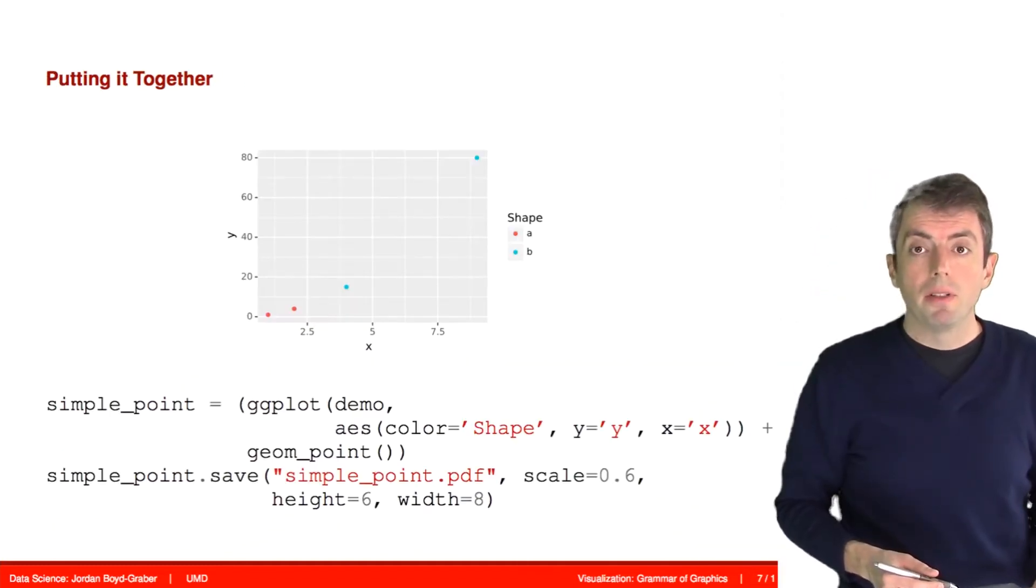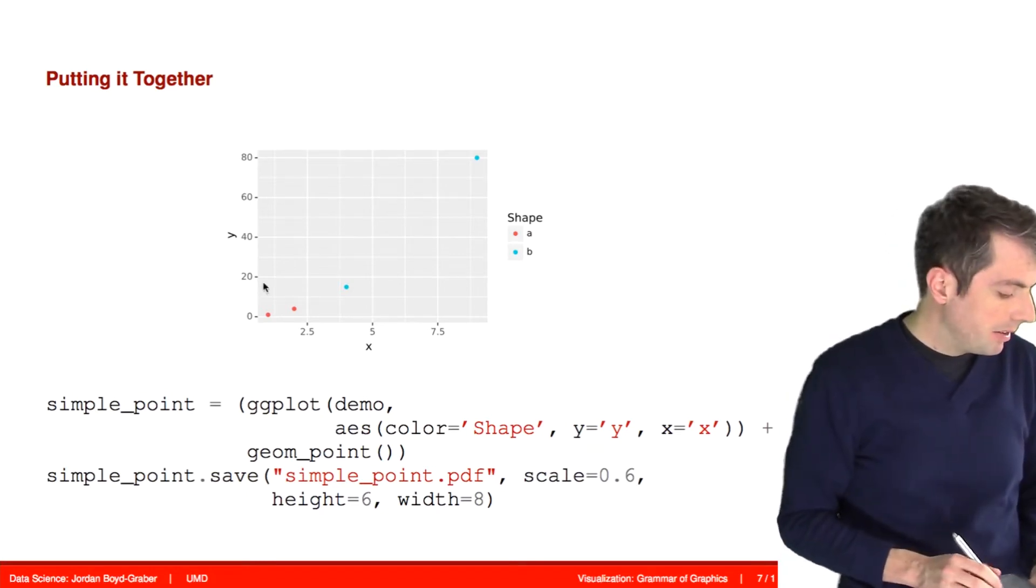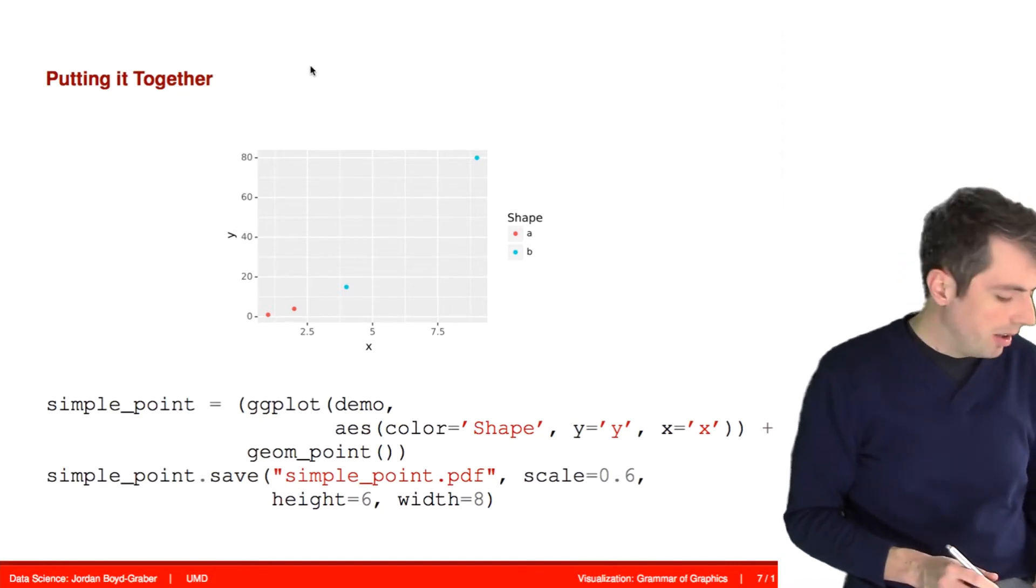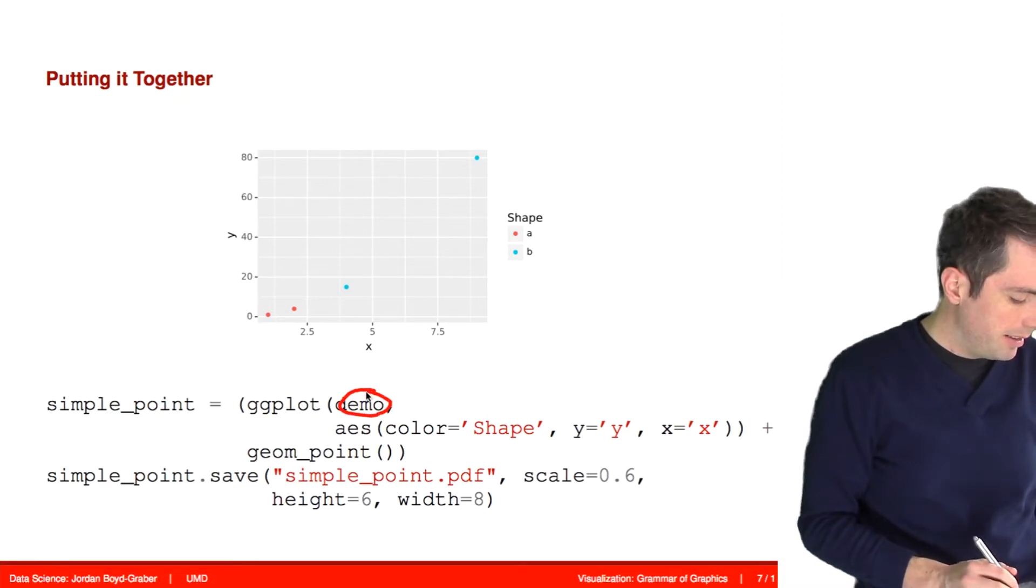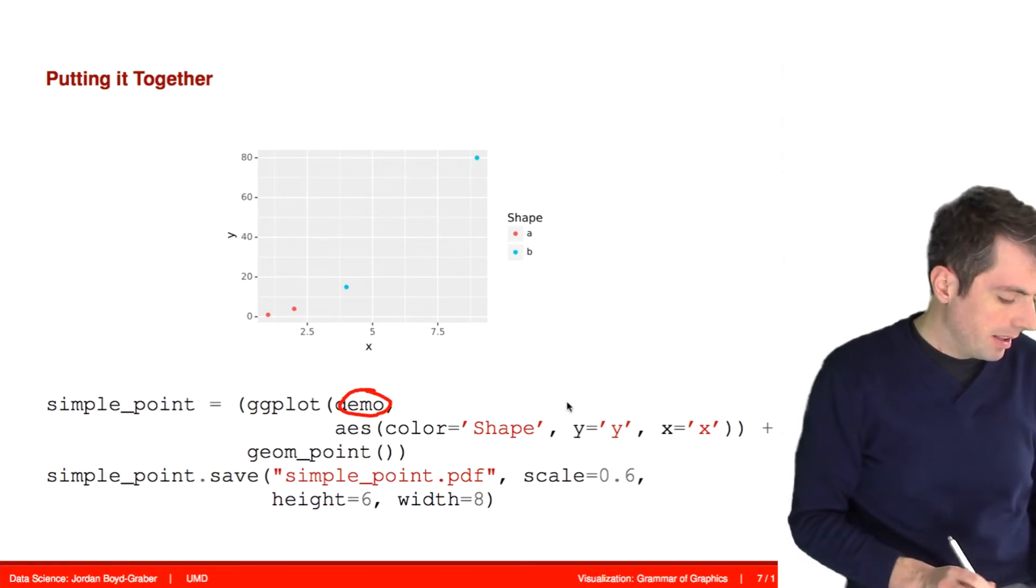Let's see a real example of doing that within plot9. At this point we have a pandas dataset called demo. Demo is our dataset and it's just a pandas data frame with the same columns that I showed you before: x, y, and shape.